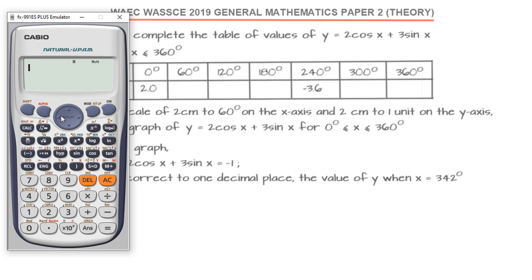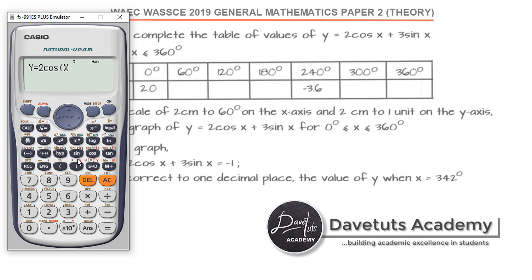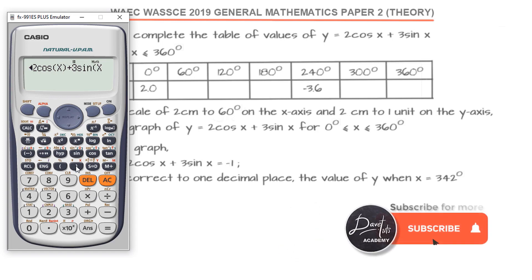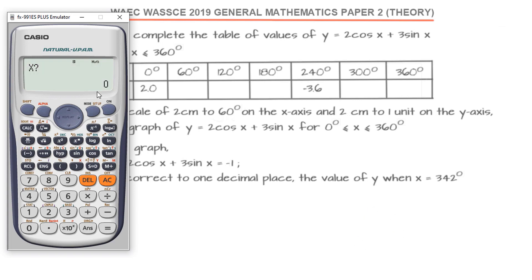You can evaluate y by pressing alpha where we have y in red, equals 2cos(x) + 3sin(x). Then you can ask the calculator to calculate for you by pressing the calculator function. When x is 0, y is 2. When x is 60, notice we are working in degrees. Press this to translate surd to decimal. This is 3.598.